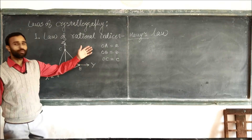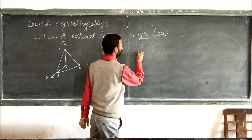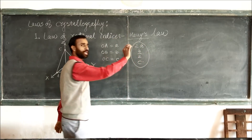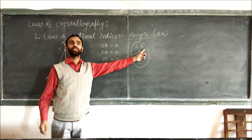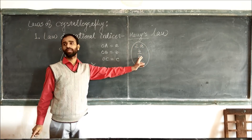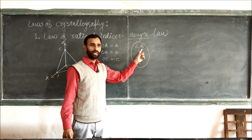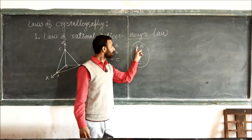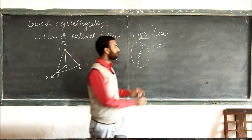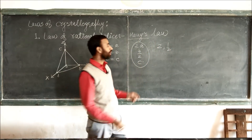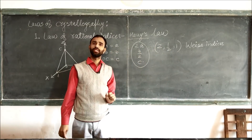Now, if any plane cuts at 2a, b/2, or c, that is acceptable. Any plane can cut these axes at integral multiples or sub-integral multiples of a, b, c — that plane is acceptable. For this plane, a, b, c are units. The multiple of a is 2, the multiple of b is 1/2, and the multiple of c is 1. These are known as Weiss indices. The multiples of a, b, c are known as Weiss indices.